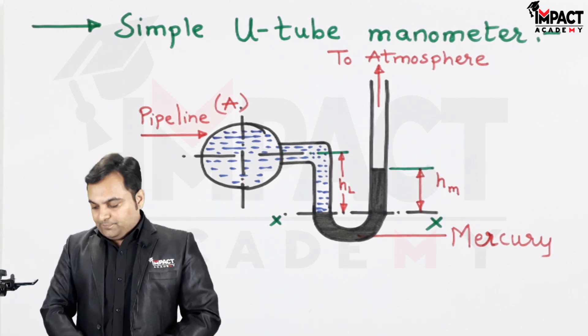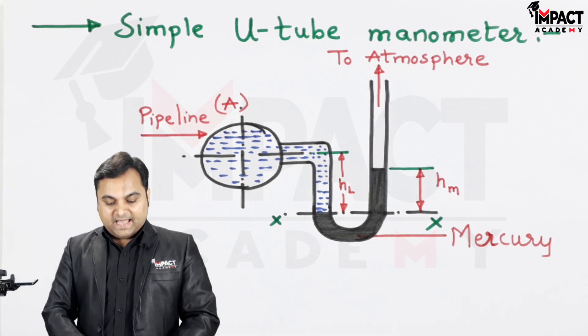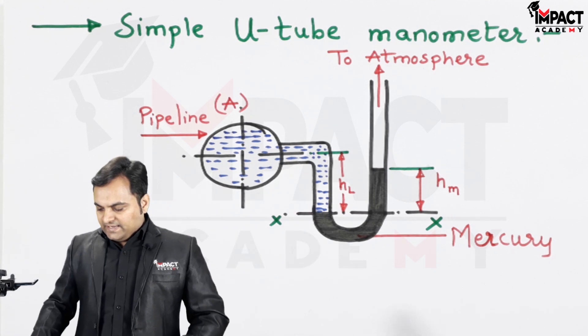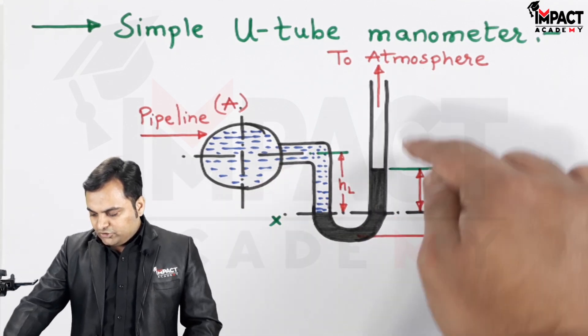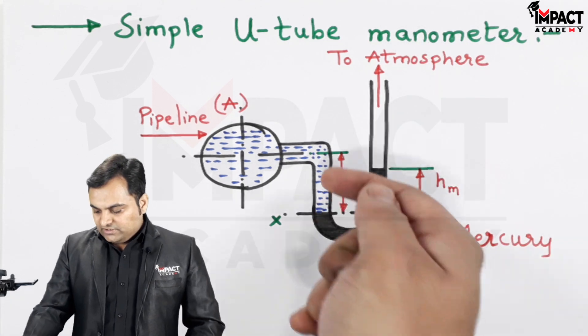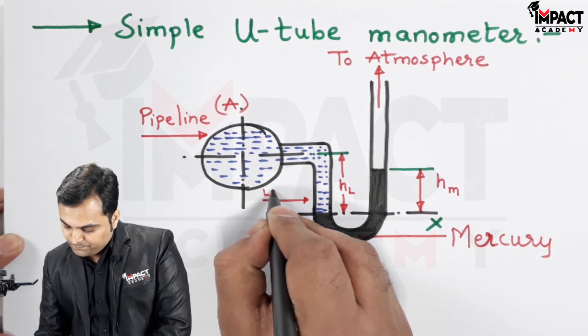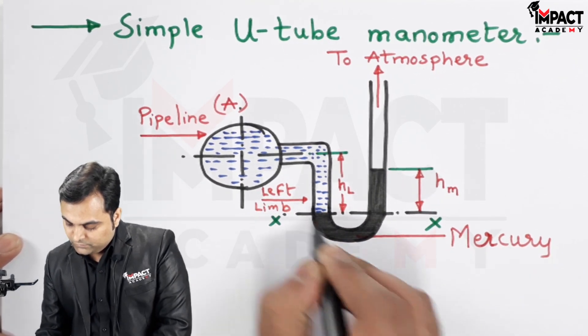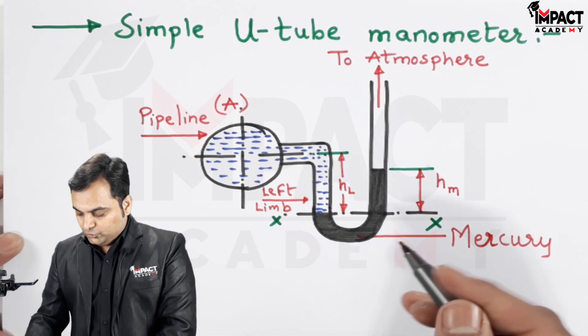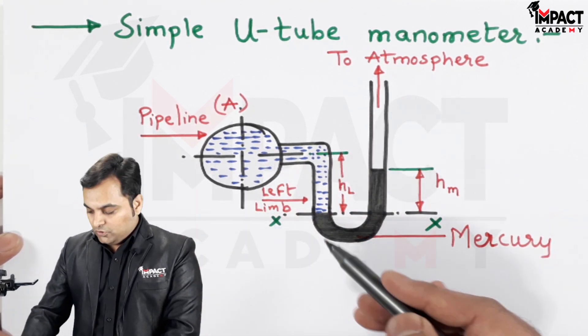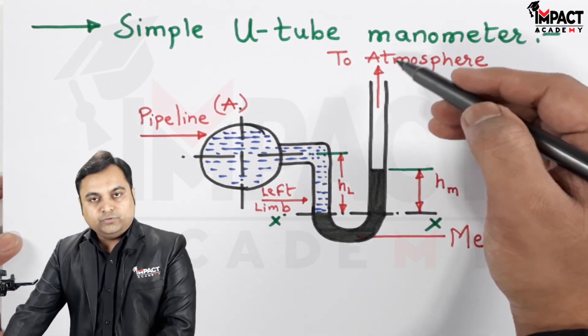Here is the simple U-tube manometer and it is used to measure pressure inside a pipeline. As we can see, there is a bent U-tube in which the left side is also called the left limb. The left limb of the U-tube mercury manometer is connected to the pipeline, whereas the right limb is open to atmosphere.